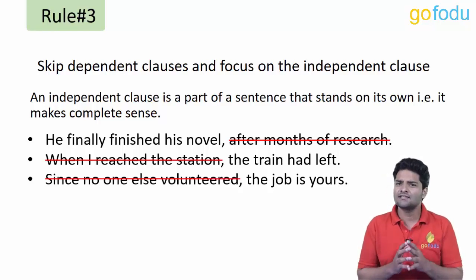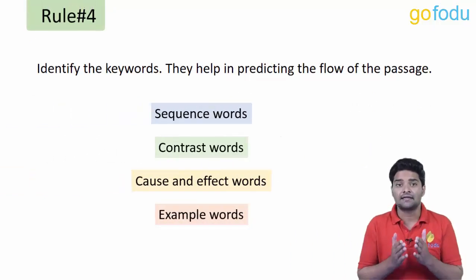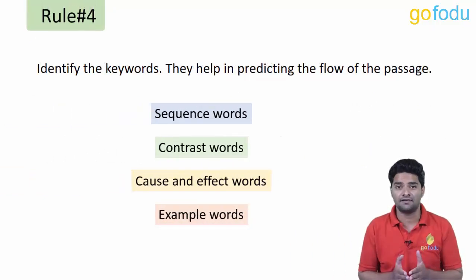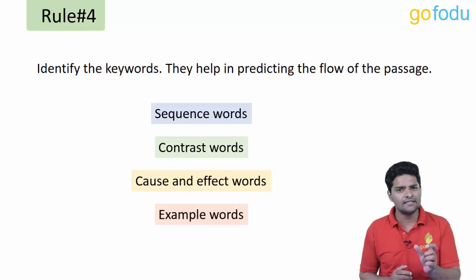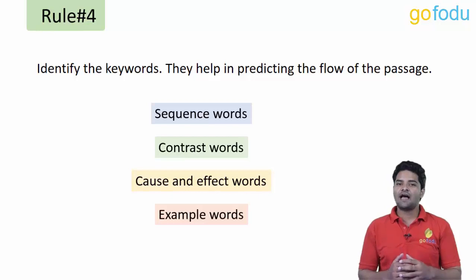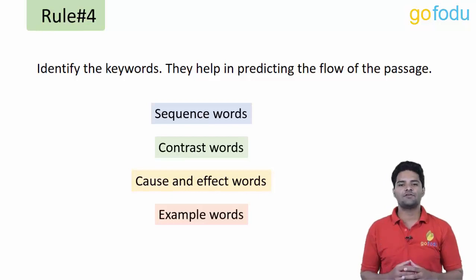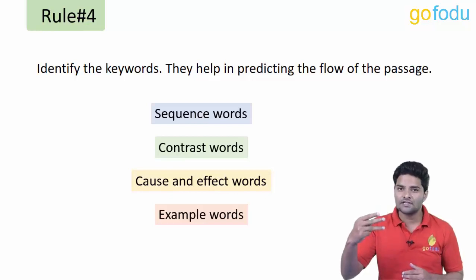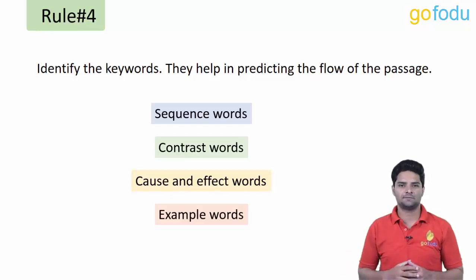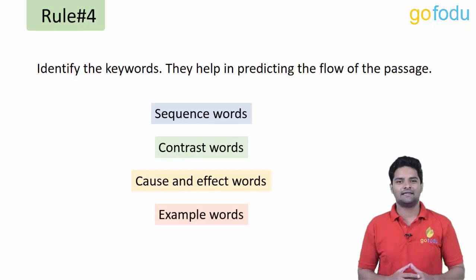There are certain keywords in RC that help us identify the ideas or flow that follows in a passage. These connecting words play a key role in skimming. We have four types of flow words: sequence words, contrast words, cause and effect words, and example words.